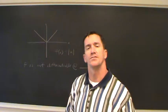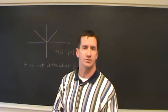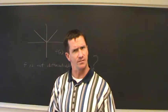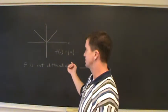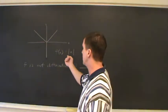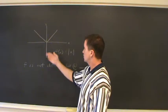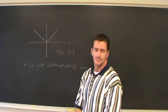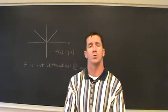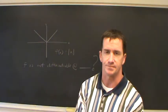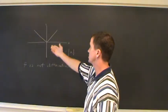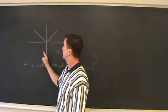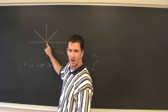We're going to talk about differentiability of functions, and we're also going to get into graphing the derivatives of functions. We'll start with this famous function, the absolute value function. The question is, where is this function differentiable? More specifically, where is this function not differentiable? This function is differentiable everywhere except for one location, at x equal to zero.